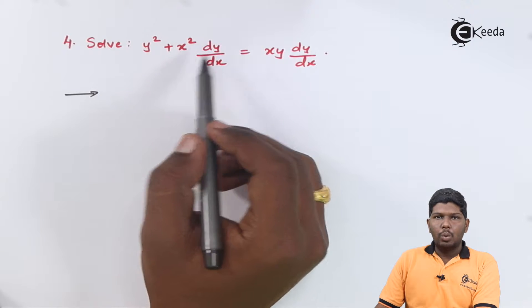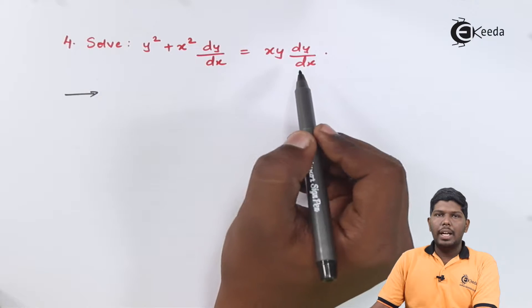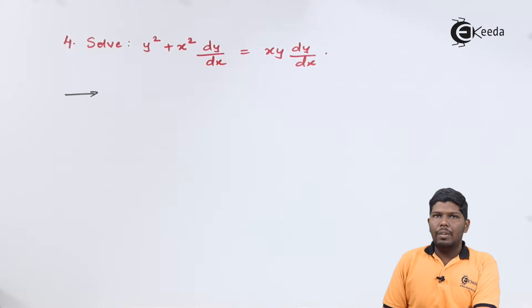y squared plus x squared dy by dx is equal to xy dy by dx. Now the first step is to find the value of dy by dx, but as you can see here we have two values of dy by dx. So let us take dy by dx common and transfer the remaining terms on the right hand side.